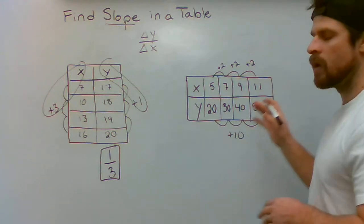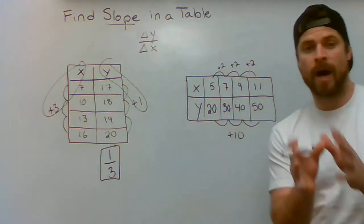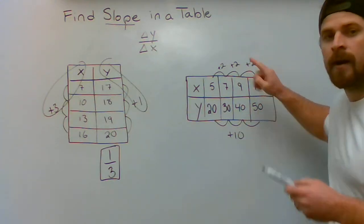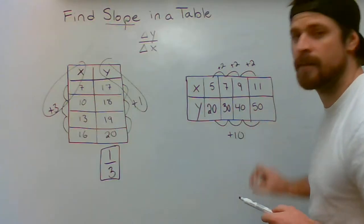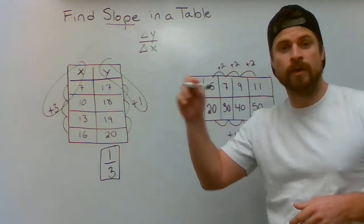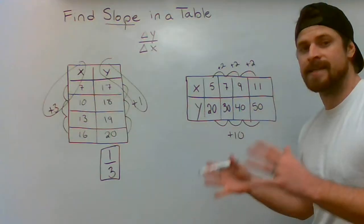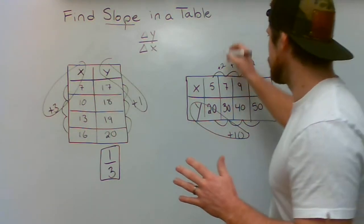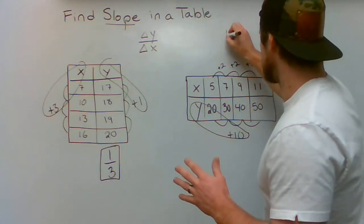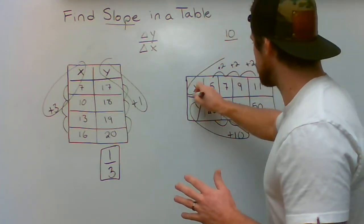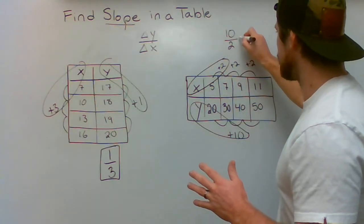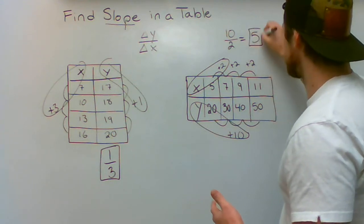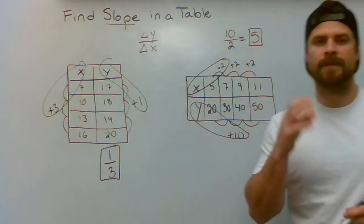So what I want to do is I want to take my change in Y and put it over my change in X. Obviously kids see the 2 on top, the 10 on bottom, and they're going to want to say 2 over 10. That's a natural misconception. Take a second, stop, and ask yourself, what is my change in Y? 10. Let's just write it over. 10 over my change in X, 2. And then simplify. 10 over 2 is going to be equivalent to 5. So my slope or my rate of change for this table would be 5.